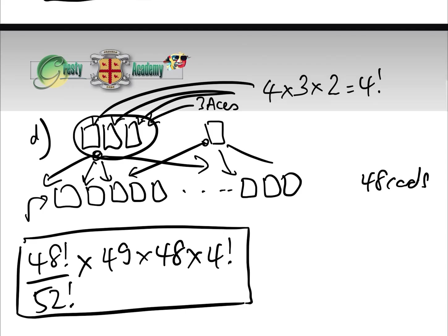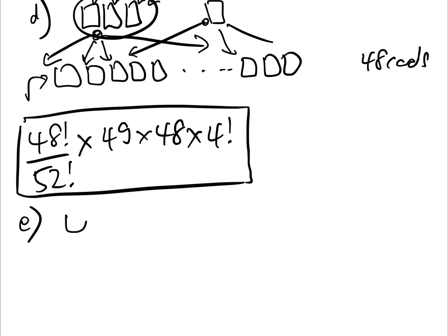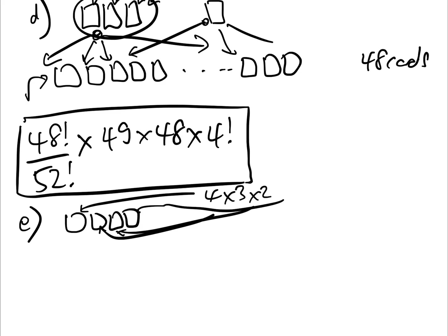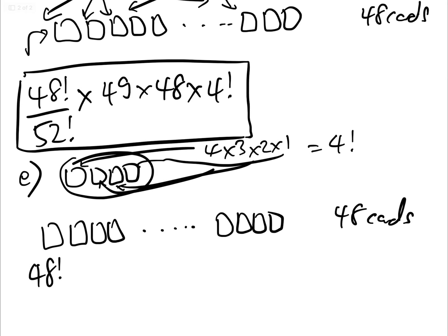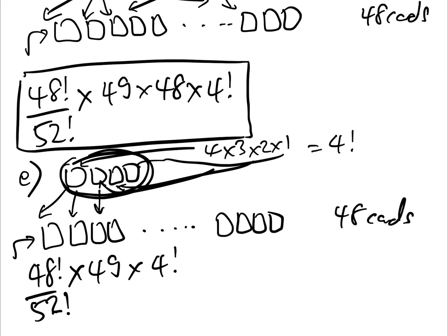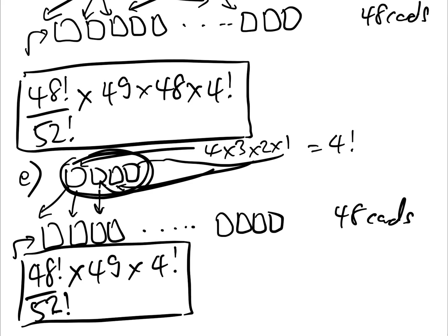Finally, case E — all four aces together: we have four ways of picking the first, three for the second, two for the third, and one for the fourth, giving 4 factorial. The block of four aces has 49 positions within the deck. The probability is 48 factorial over 52 factorial times 49 times 4 factorial.